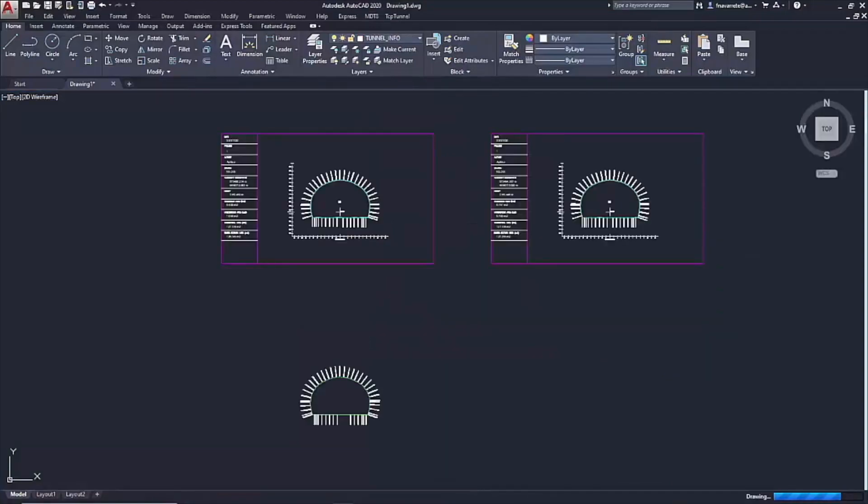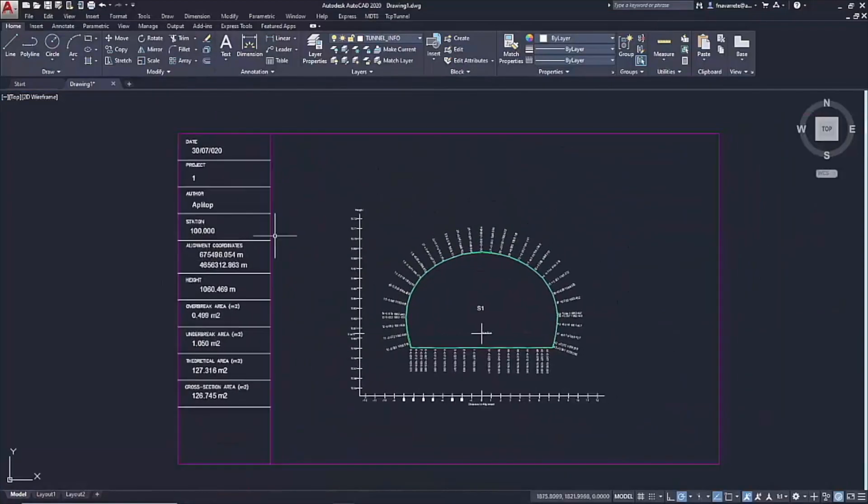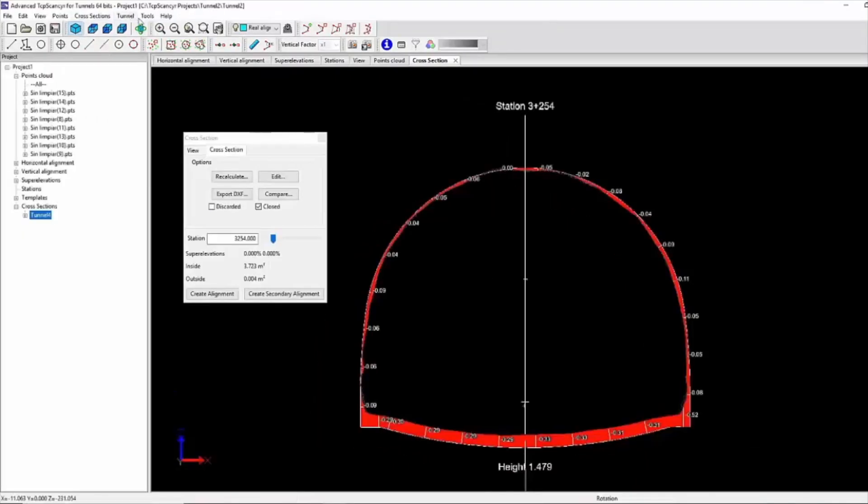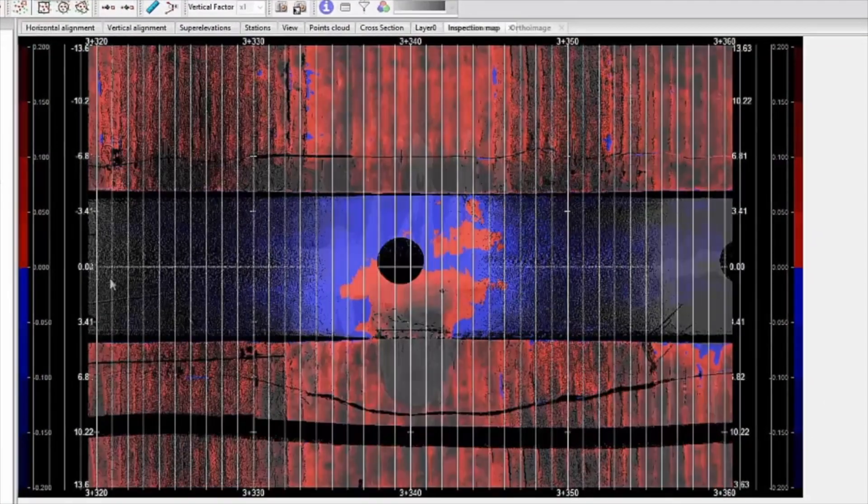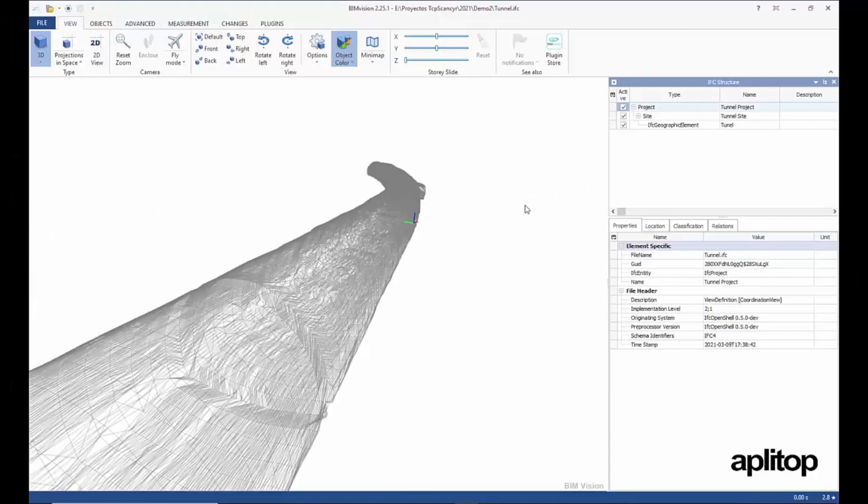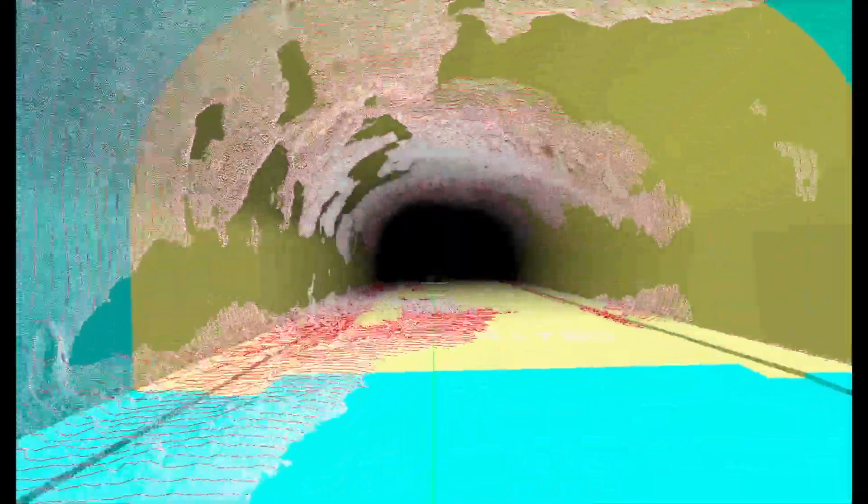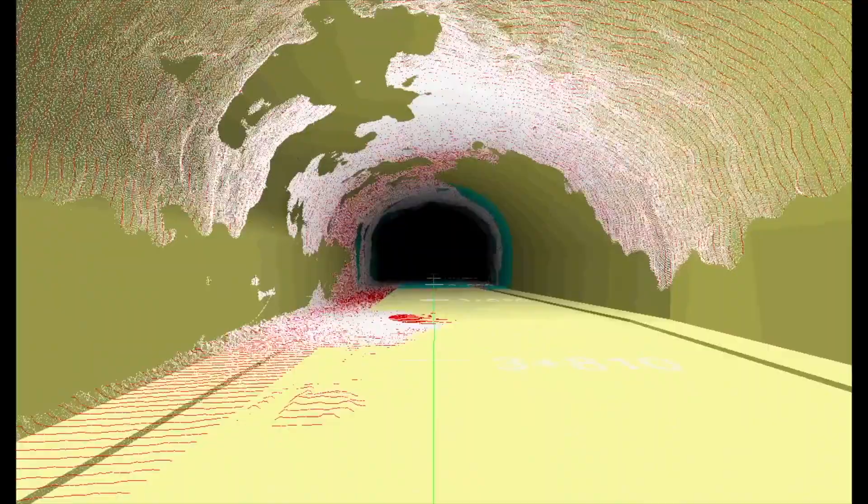TCP Tunnel Scan works together with TCP Scanser or TCP Tunnel CAD to draw profiles, generate area and volume reports, inspection maps, ortho images, videos, 3D models and many more.